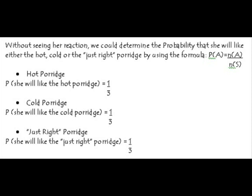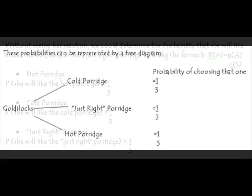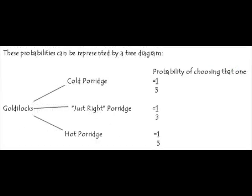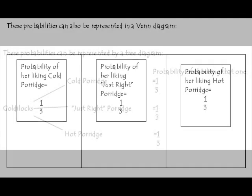It is also one third for cold and just right, because they all have the same number of elements in the event space and the same number of elements in the sample space. These probabilities can also be represented in tree diagrams and in a Venn diagram.